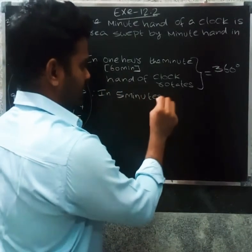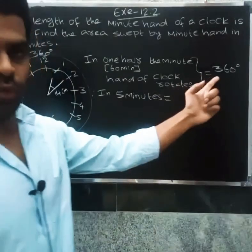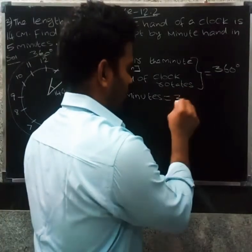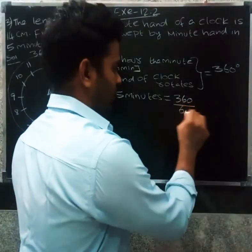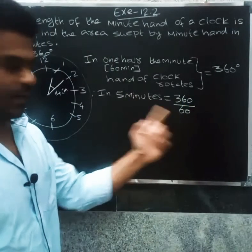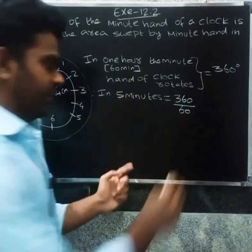Therefore, in 5 minutes: one minute equals 360 divided by 60. For 5 minutes, so 360 divided by 60 and multiply by 5.